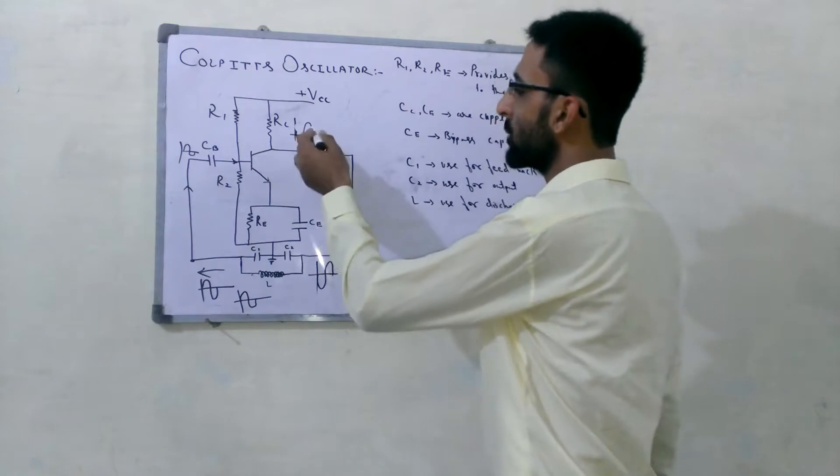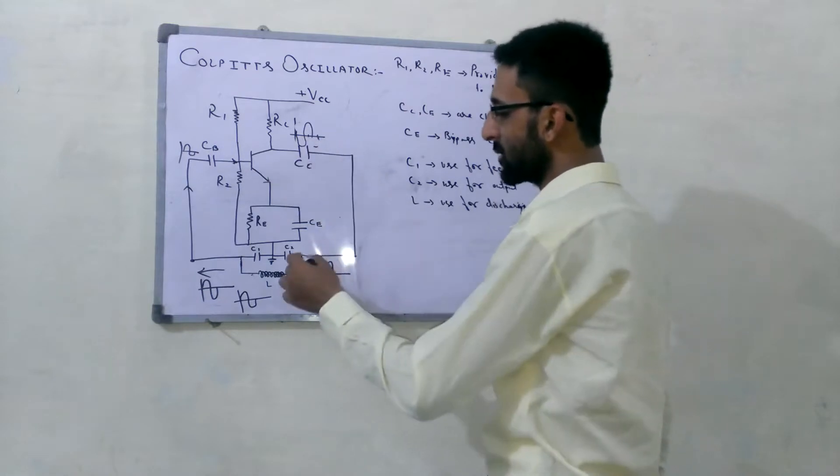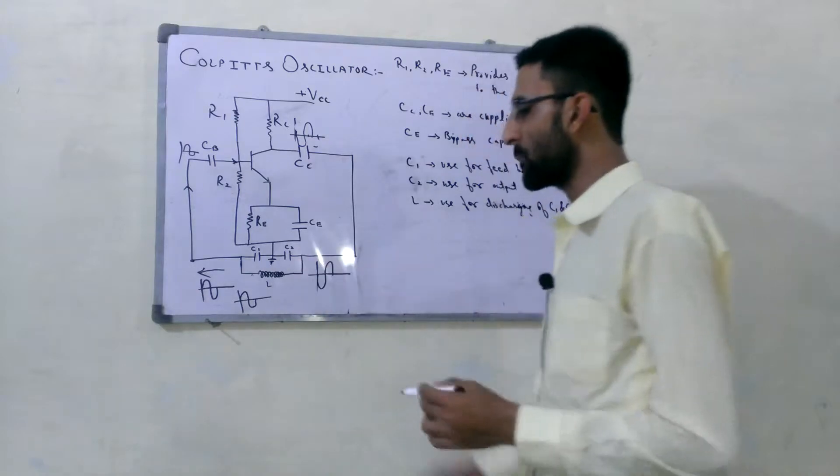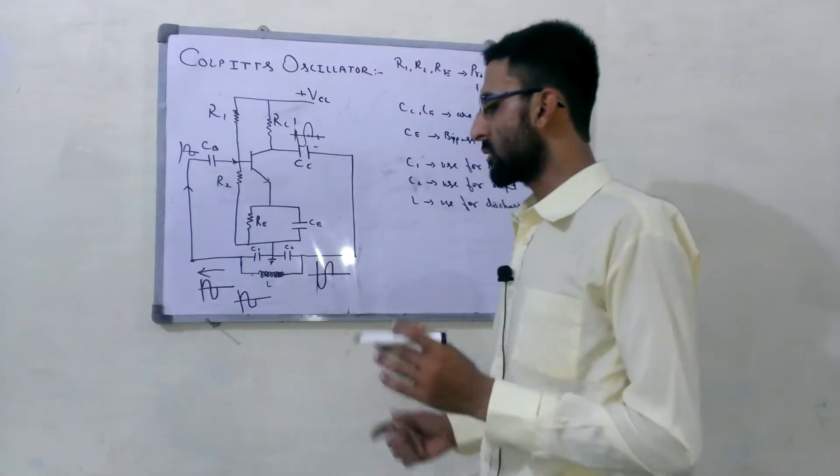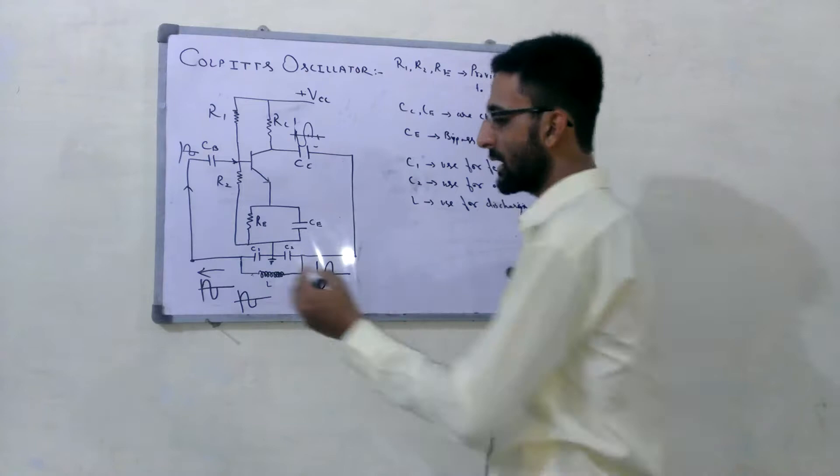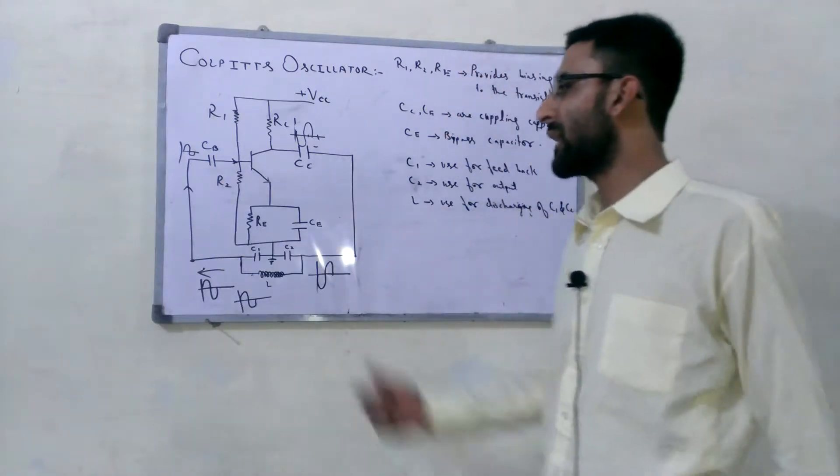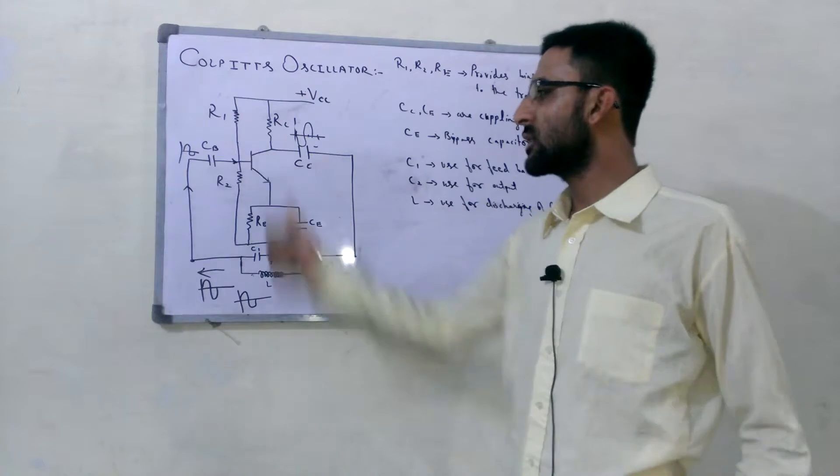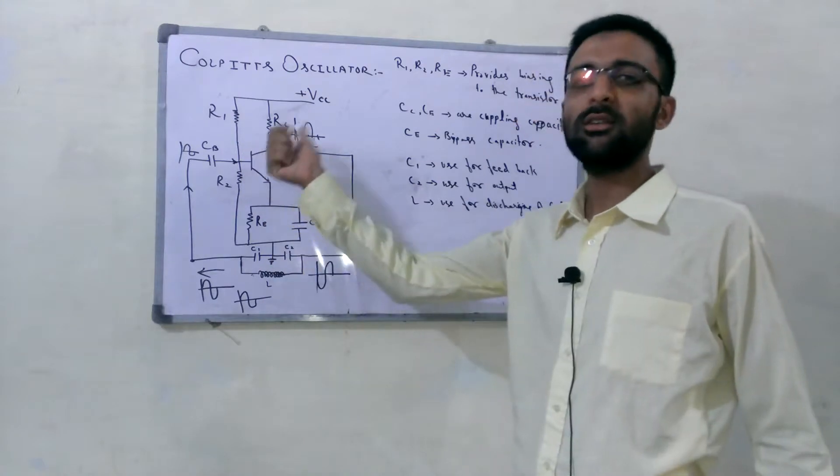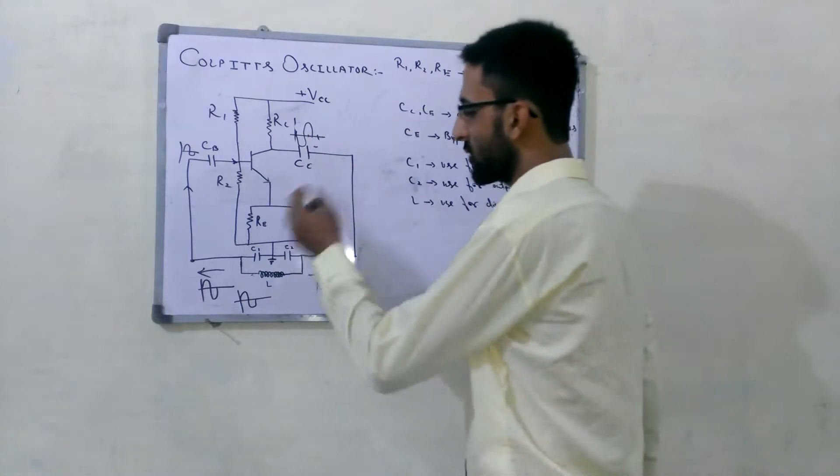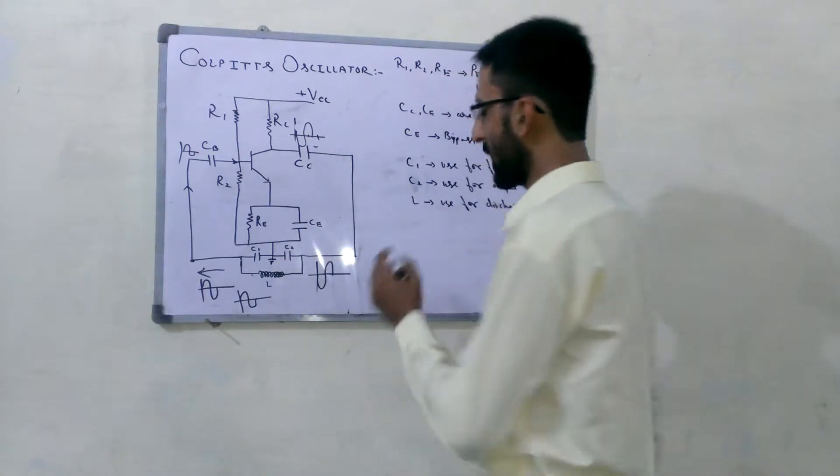And then again amplified, and then again comes here. And due to the damping process, its amplitude decreases, and the decrease in amplitude is recovered by this transistor. This transistor amplifies that damped signal, and then we get a continuous AC signal like that.